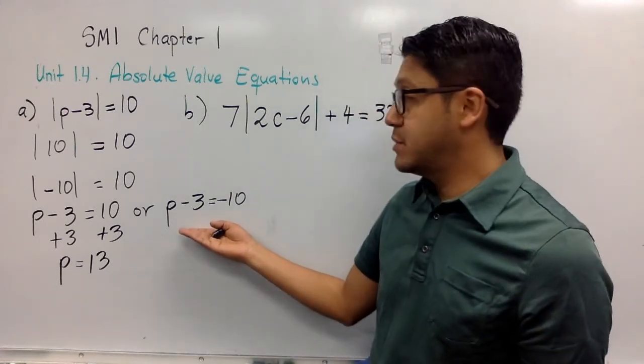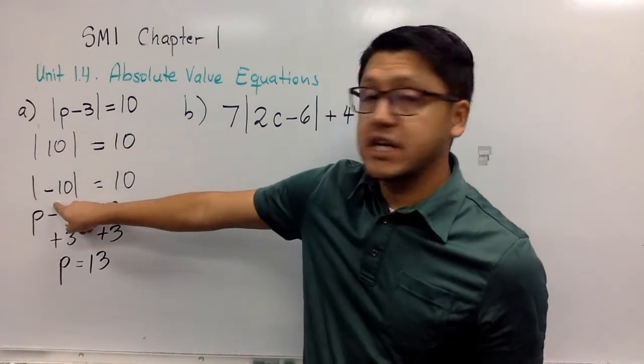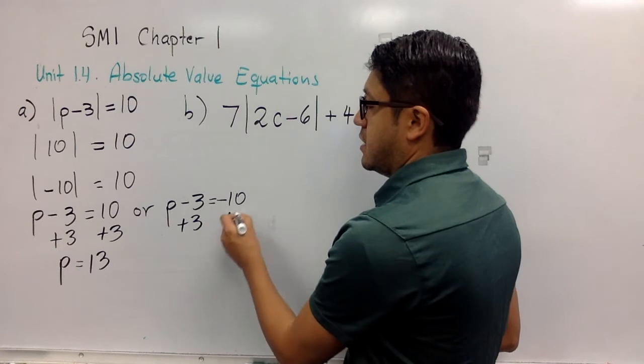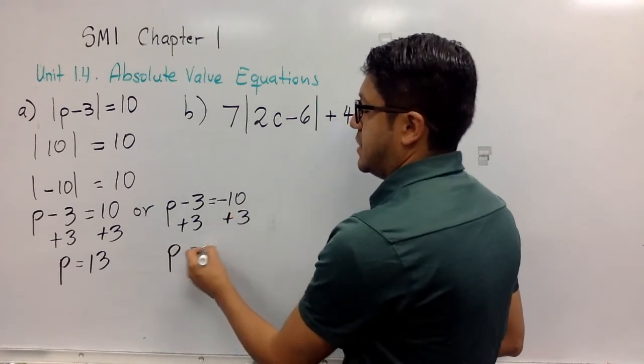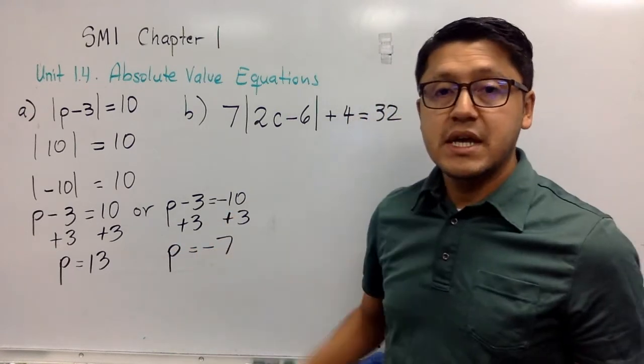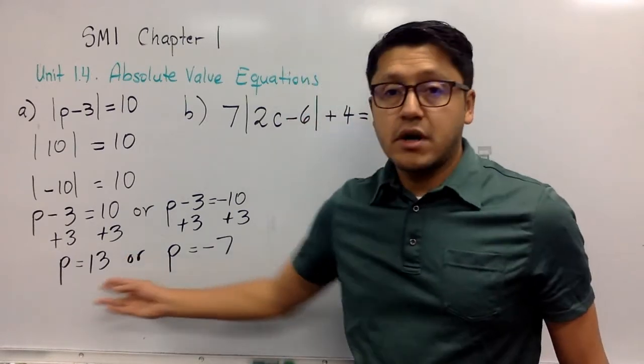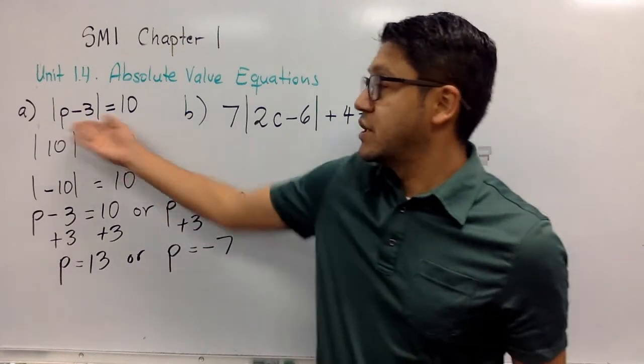But also I take into account the other possibility where this expression can also be negative 10. And now adding 3, I say that p can also be negative 7.